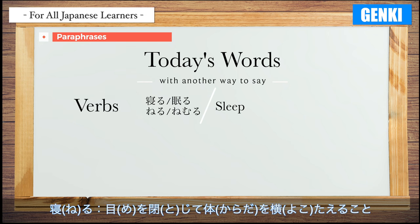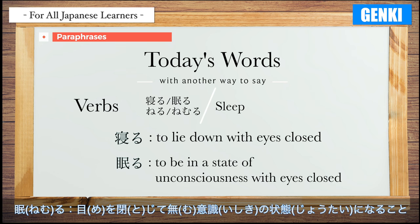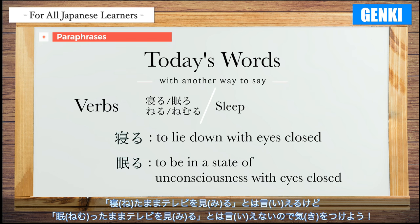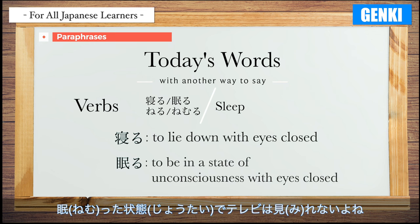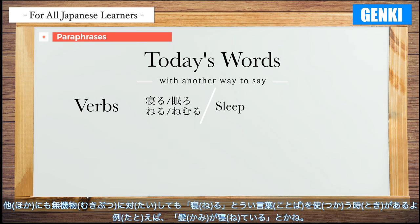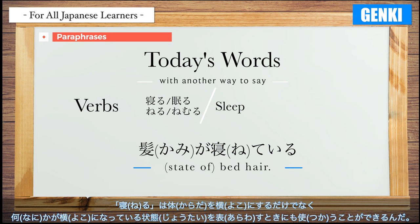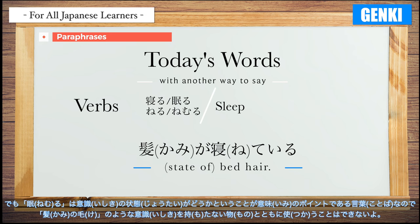寝る and 眠る both mean 'sleep.' 寝る is to lie down with eyes closed, and 眠る is to be in a state of unconsciousness with eyes closed. Both can be used when it comes to sleep, but notice you can say 寝たままテレビを見る (watching TV while lying down) but not 眠ったままテレビを見る, because you cannot watch TV while unconscious. 寝る can also refer to inanimate objects — for example, 髪が寝ている (the hair is lying flat). 寝る can describe the state of something lying down, but 眠る depends on the state of consciousness, so it cannot be used with non-conscious objects such as hair.